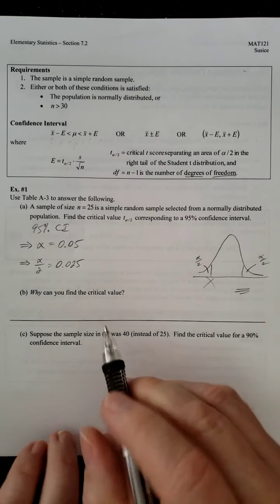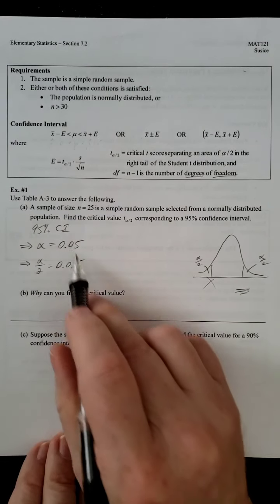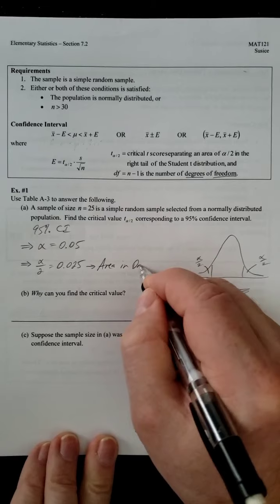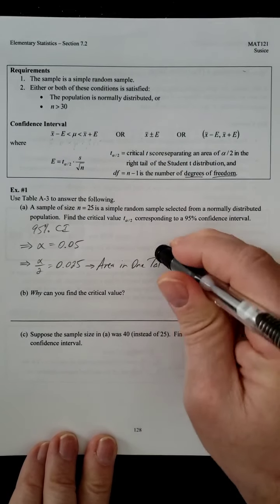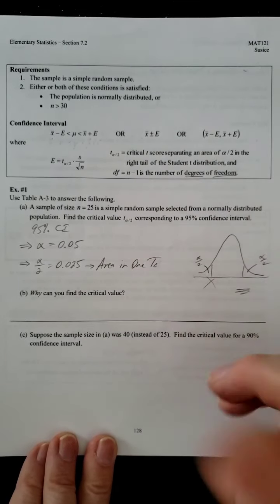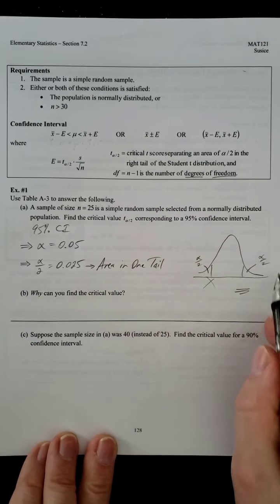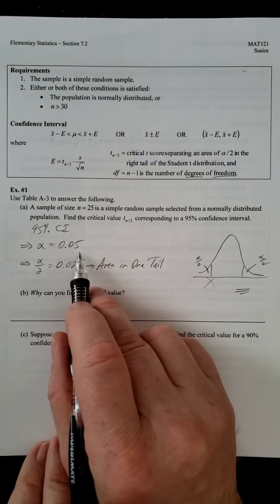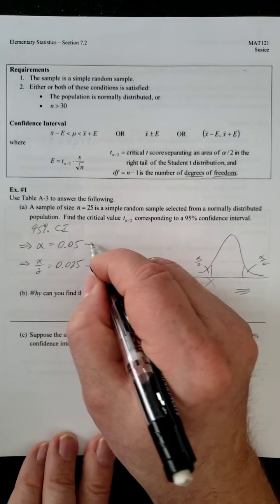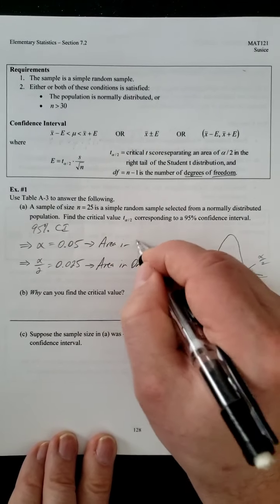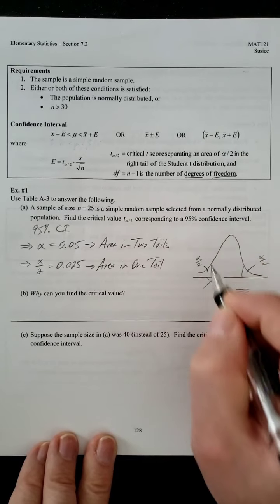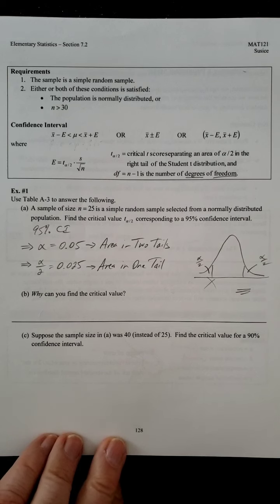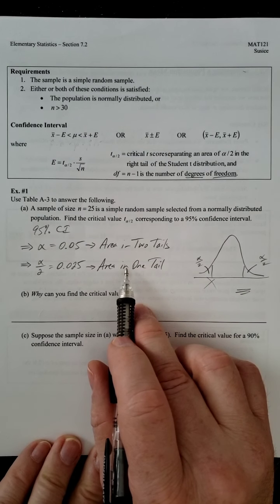Now, it turns out this is going to be the area in one tail. Which we can kind of see from our picture, right? Alpha over 2 is the area in one tail. Alpha over 2 is the area in the other tail. Now, if we combine them together, then this could be called the area in two tails. Now, you're starting to say, well, why is this important? Well, you're going to see it in the table in a second.